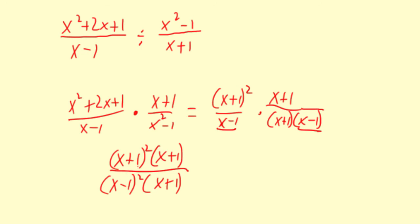Okay, let's see what we can simplify. We have an x plus 1 in common and that's it. So the answer is going to be x plus 1 squared divided by x minus 1 quantity squared. So that's how you divide rational expressions.